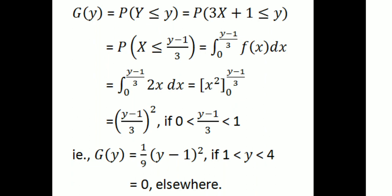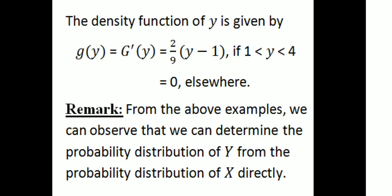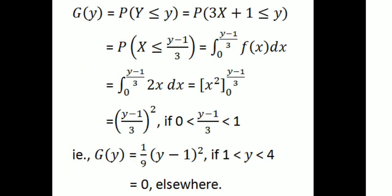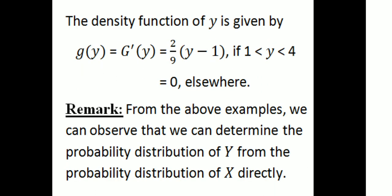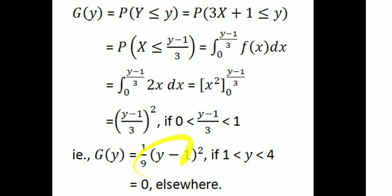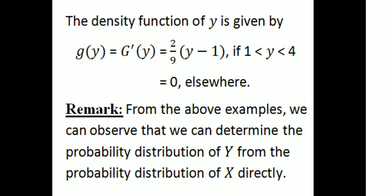So G(y) = ((y−1)/3)². Then the PDF of Y is g(y) = G'(y) = (2/9)(y−1) for 1 < y < 4, and 0 elsewhere.